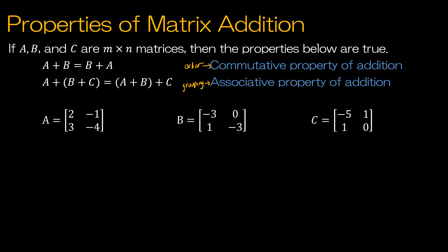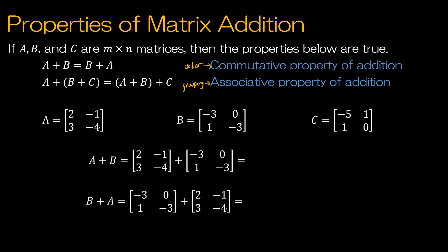For practice, we have A, B, and C. We're going to show that A plus B is equal to B plus A — the commutative property of addition. To do this, we just add: 2 plus negative 3 is negative 1, negative 1 plus 0 is negative 1, 3 plus 1 is 4, and negative 4 plus negative 3 is negative 7.